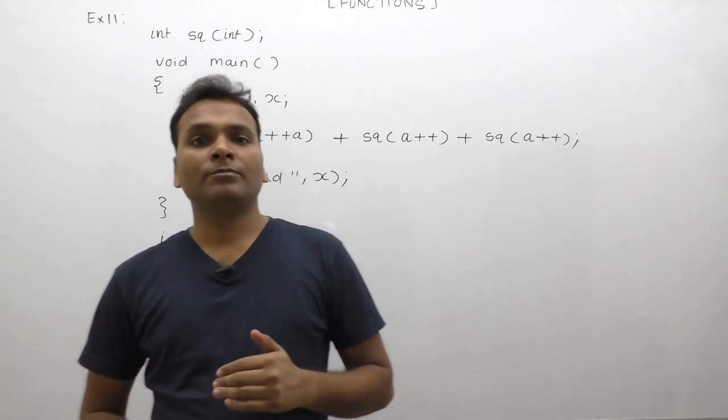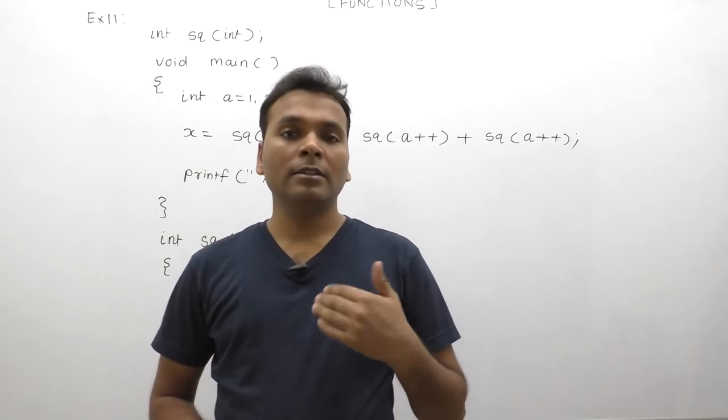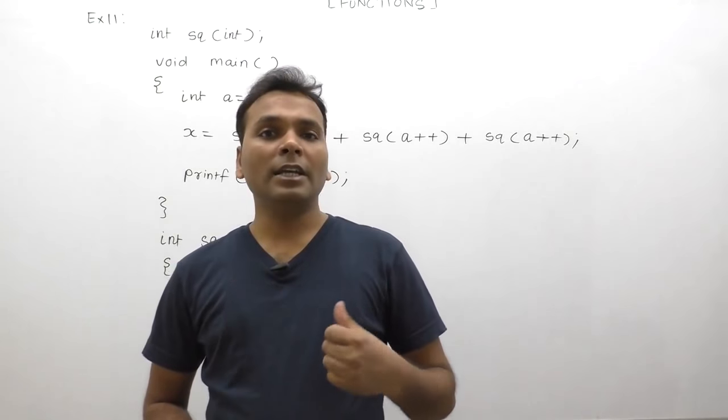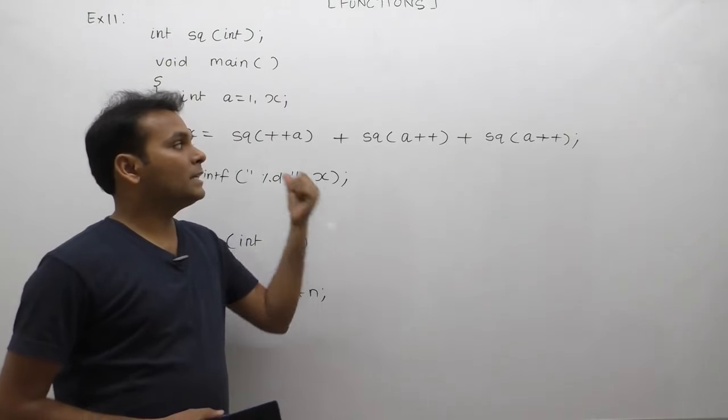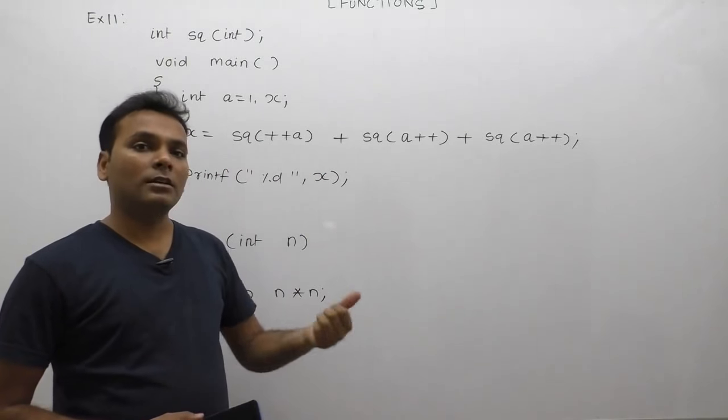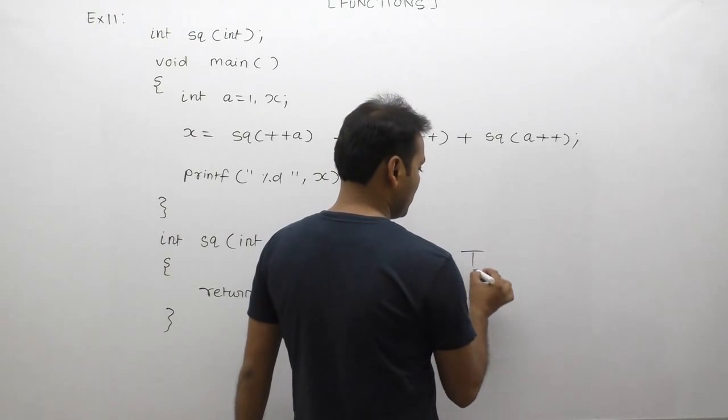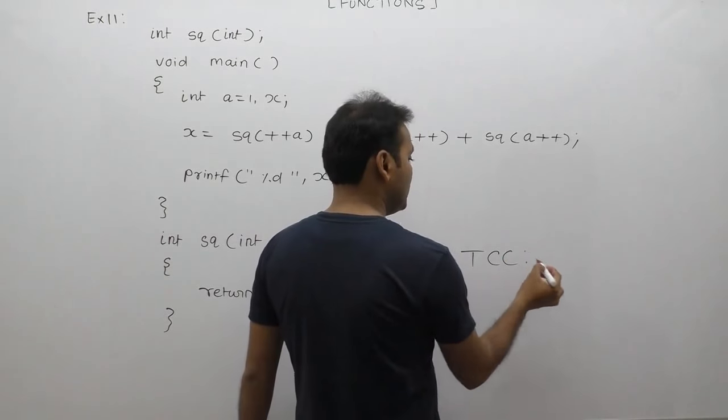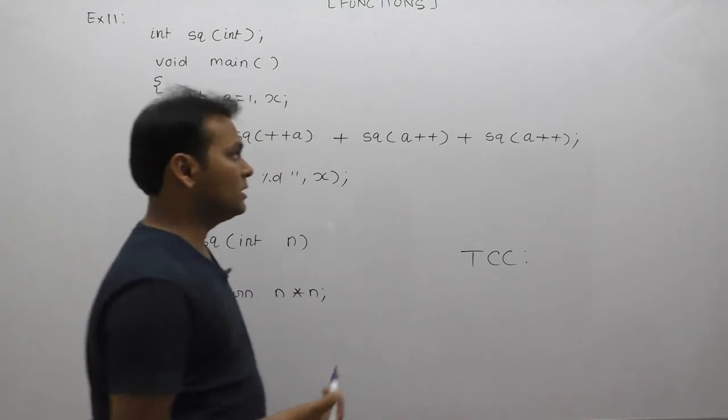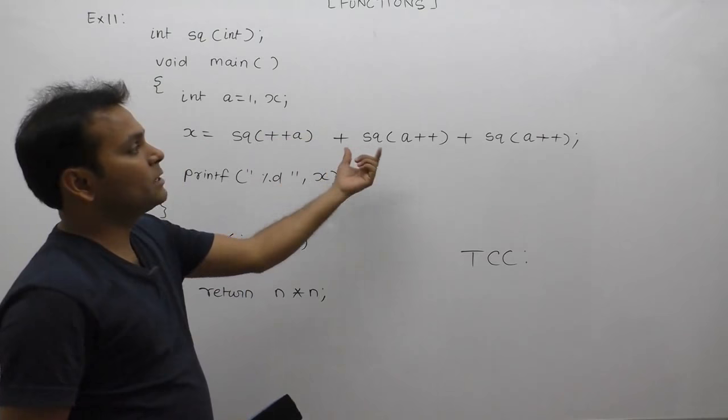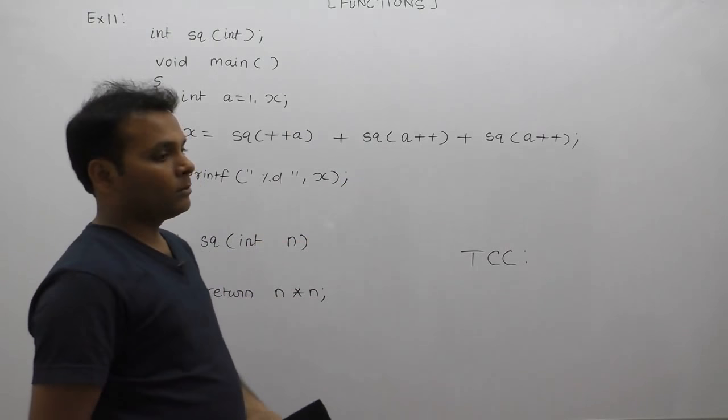As we discussed in previous lectures, inside expressions, the order of function execution is completely dependent on the compiler. According to Turbo C compiler or TCC compilers, functions are called based on the priority of the operator.